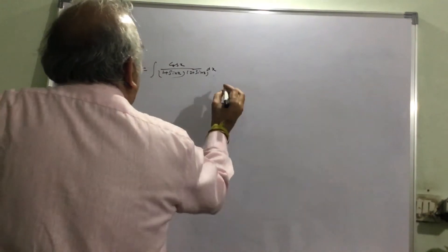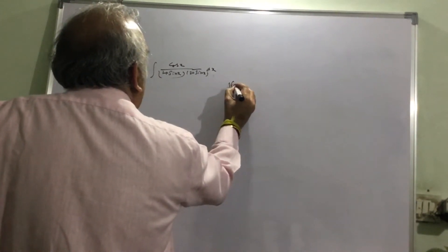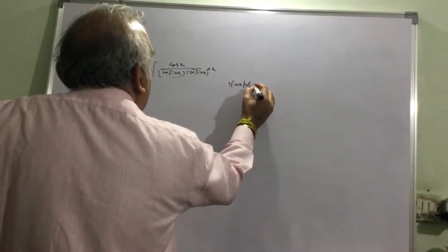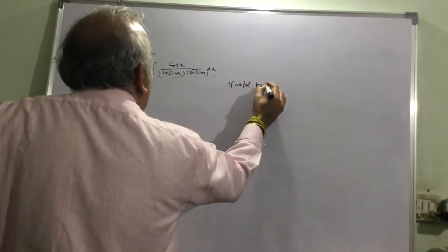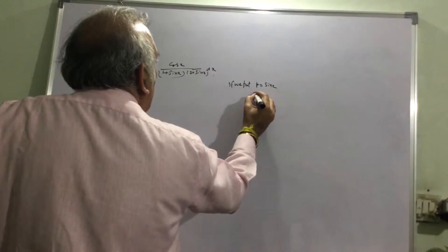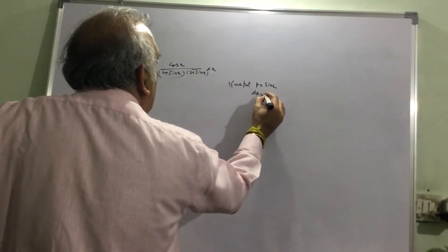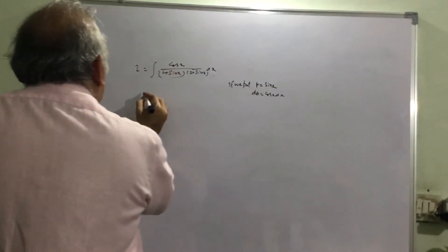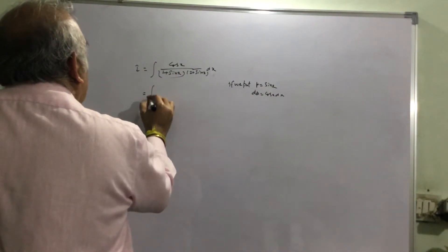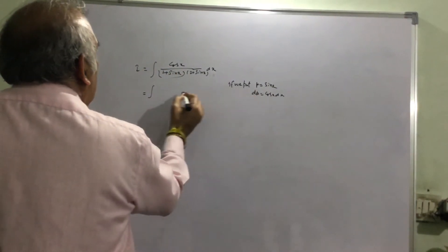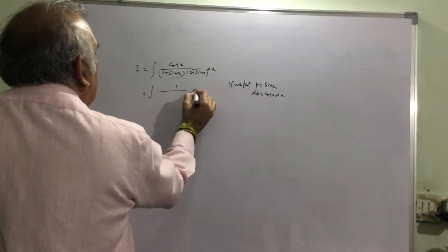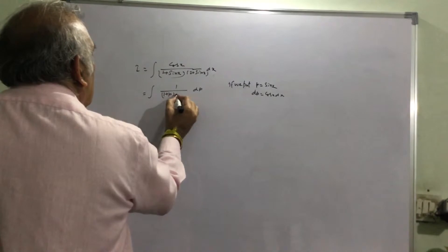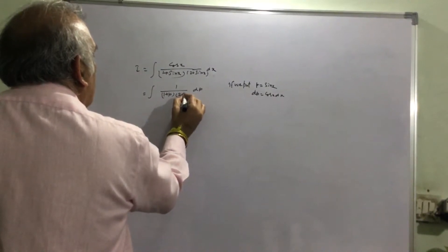If we put p equal to sin x, we get dp equal to cos x dx. Putting this in the integral, cos x dx becomes dp, so we get 1 divided by (1 plus p)(2 plus p) dp.